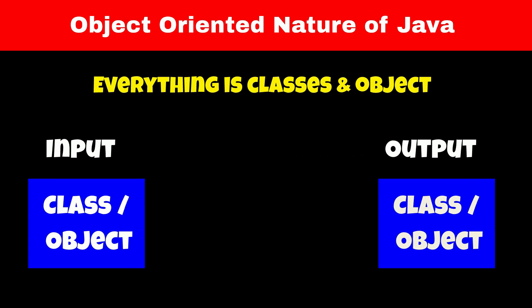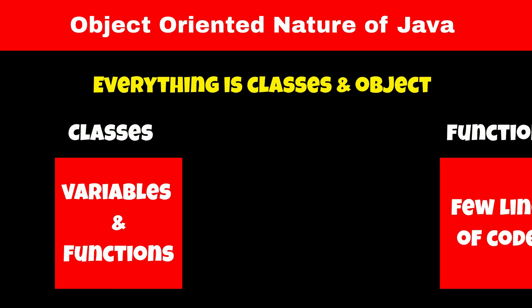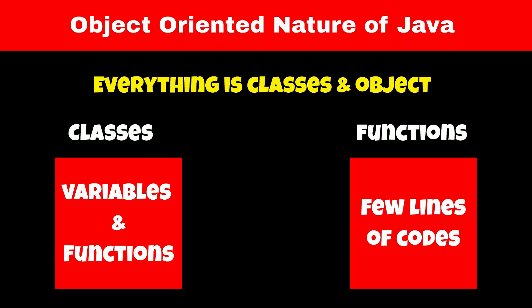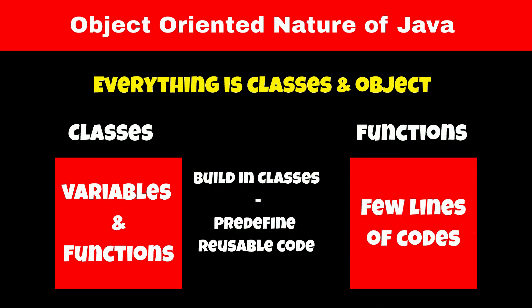Classes are like containers or wrappers which hold variables and functions. Similarly, functions are wrappers for some lines of code which we can call using a name. Java provides us with some built-in classes and functions, meaning Java developers have already written code for us to use for taking input and displaying output.